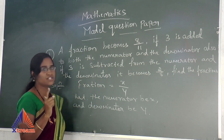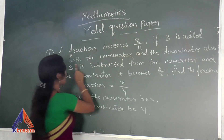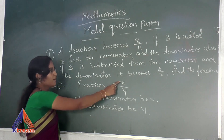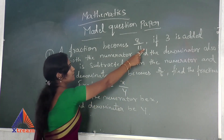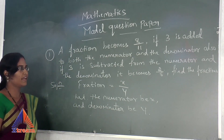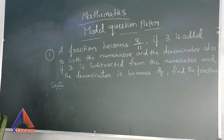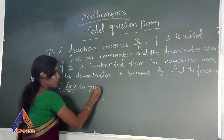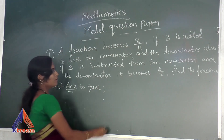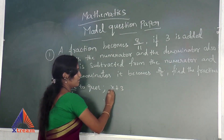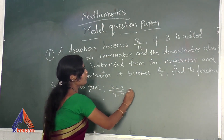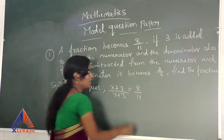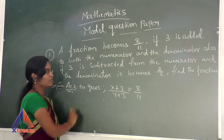Here two conditions are given. First: if 3 is added to both the numerator and the denominator, we write X plus 3 divided by Y plus 3. According to the question, X plus 3 divided by Y plus 3 is equal to 8 by 11. This is the first condition.